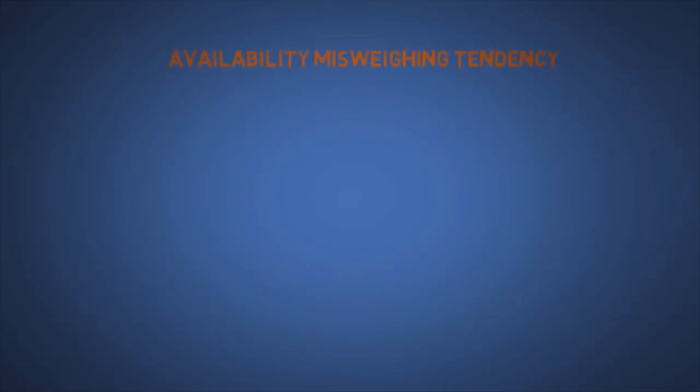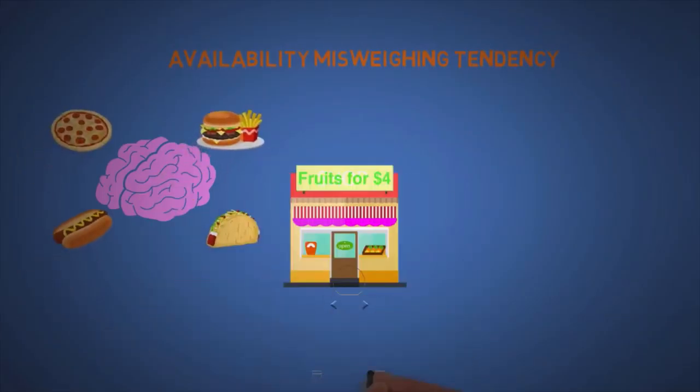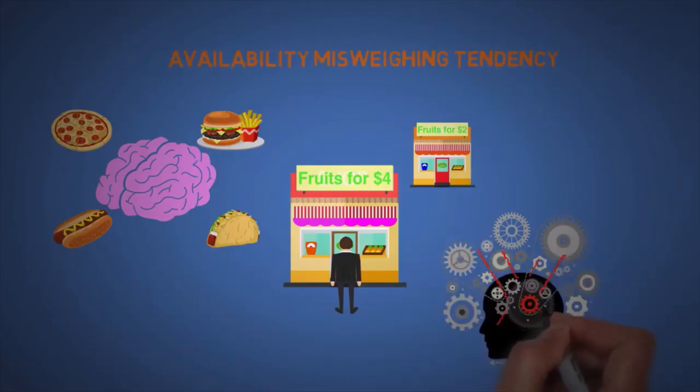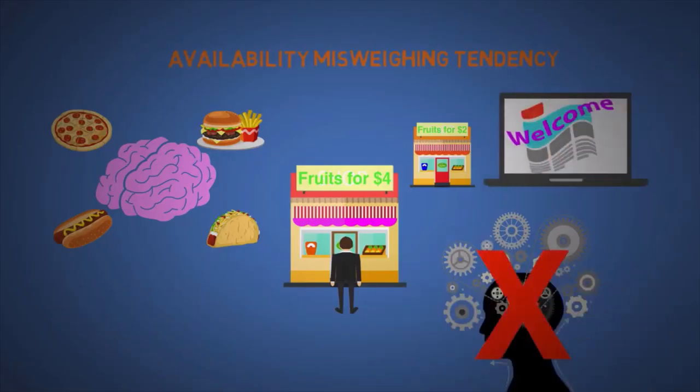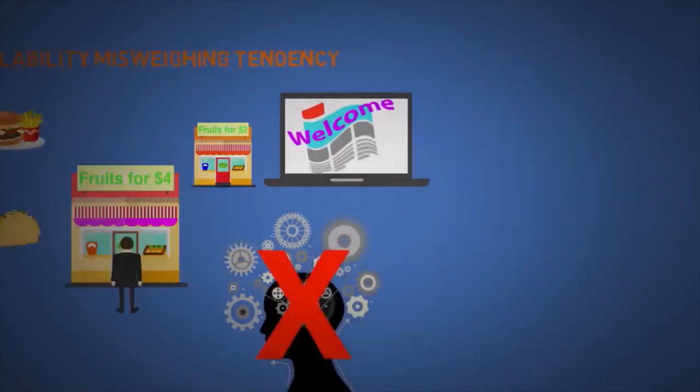The eighteenth is availability misweighing tendency. The mind works with what is easily available to it. Like fast food. We might buy things that's available right in front of us even if there's something much cheaper somewhere else. This is why we have instincts, so the mind doesn't have to work as hard figuring stuff out. So if you got a confusing website or advertisement, then good luck.